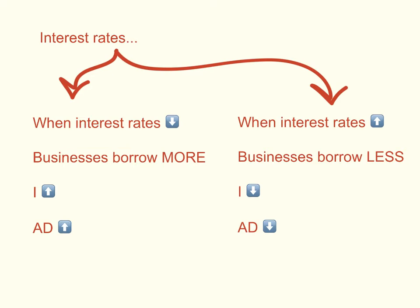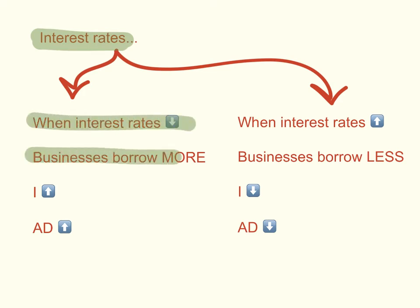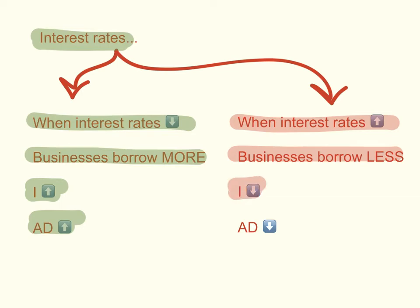The first factor that causes shifts in investment spending, and therefore shifts in the aggregate demand curve, is interest rates. When interest rates fall, businesses tend to borrow more because the cost of borrowing is cheaper. This tends to increase investment spending, and therefore aggregate demand increases and the curve shifts to the right. The opposite is true: when interest rates rise, the cost of borrowing rises, so businesses tend to borrow less, invest less, and aggregate demand decreases and the curve shifts to the left. A lot of business investment spending is done through borrowing, which is why investment spending is very responsive to the level of interest rates.